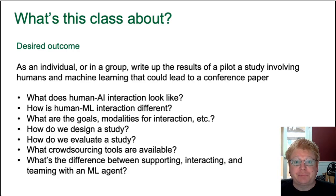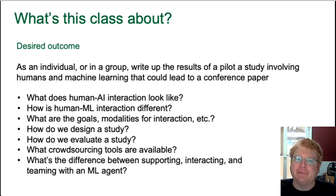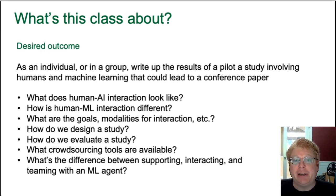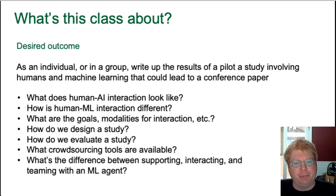In order to get there, we're going to have to cover a number of things. What does human-AI interaction look like in general, and how is it different when the agent is learning? In an interactive machine learning setting, what are the goals? What are you trying to do that's different when there's no human in the loop? And what are the different modalities? Are you having a person interact with a mouse, are you looking at a video of a person, or is the person controlling a robot physically?